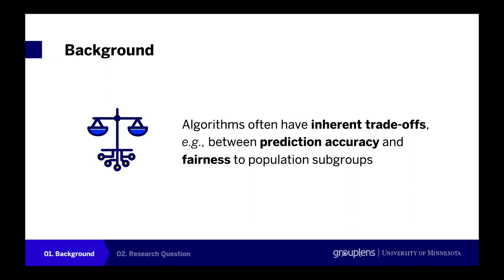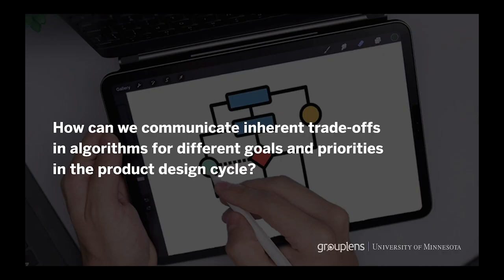It is critical to understand such algorithmic trade-offs, as they not only impact intended user experience, but also raise serious ethical concerns and might result in societal-level consequences. So, how can we better communicate inherent trade-offs in algorithms for different design goals and different priorities in the product design process?